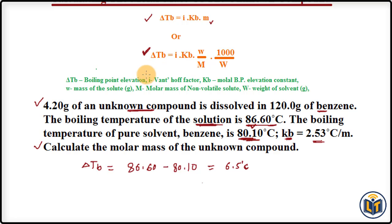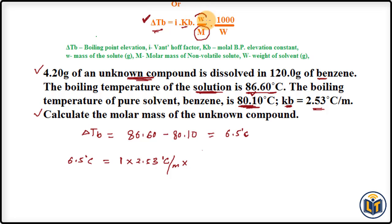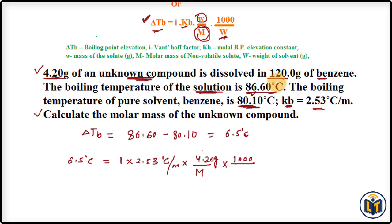Now we apply the formula to calculate the molar mass. Plugging in the values: Delta TB = 6.5°C, i = 1 (since the compound is unknown and assumed non-electrolyte), KB = 2.53°C·kg/mol, mass of solute = 4.20 grams, molar mass = M (unknown), multiplied by 1000, divided by mass of solvent = 120.0 grams.